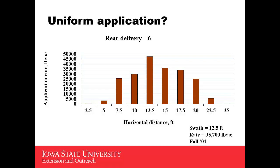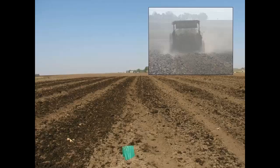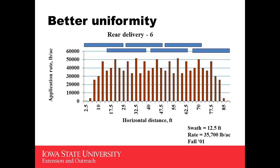In a graphical form, this was work done by Mark Hanna at Iowa State University with a rear delivery feeder spreader. The swath width was 12.5 feet and the rate was about 35,700 pounds per acre — this was done in fall 2001. The distribution in horizontal distance feet goes from zero out to about 25 feet, with the heaviest application rate right in the middle, right behind the spreader. That's what we'd expect to see. So what can we do to manage this on the farm to get the right application rate without that variability across the spread pattern?